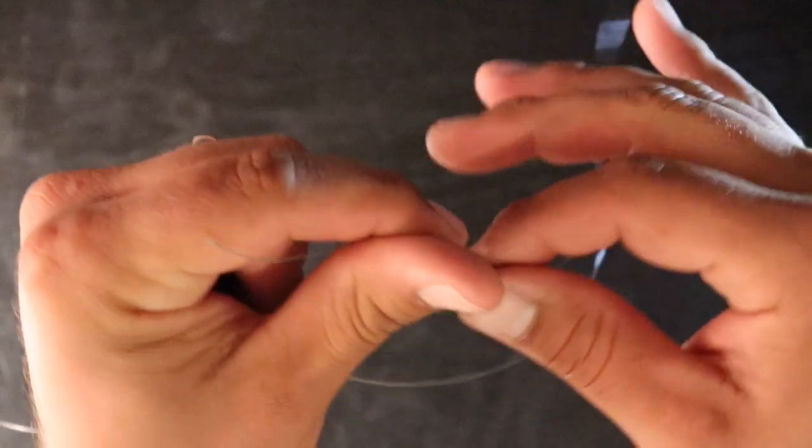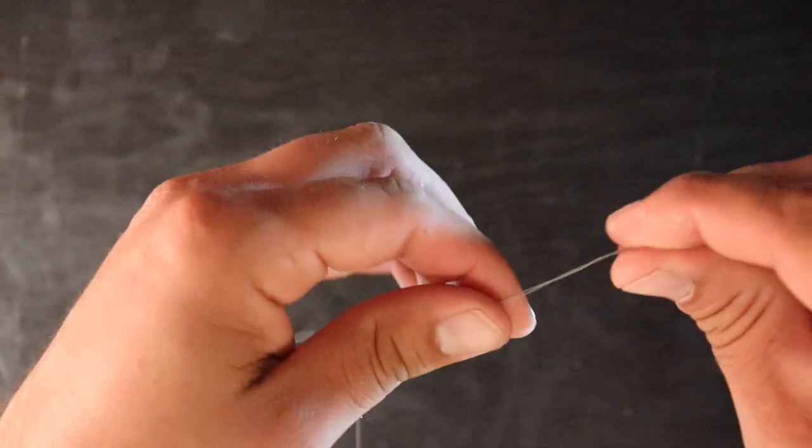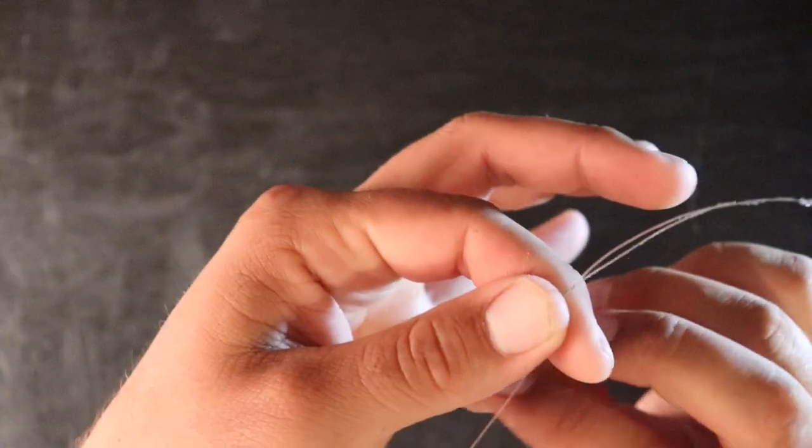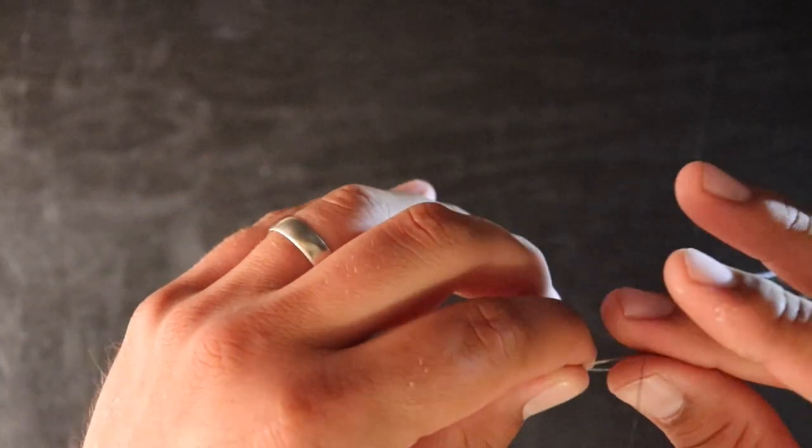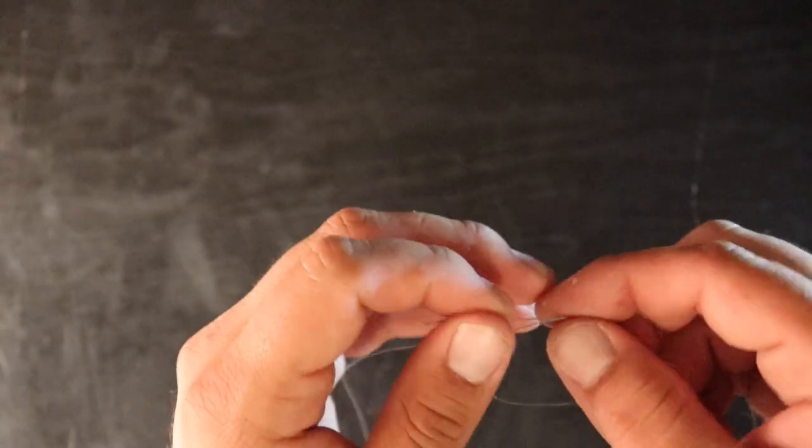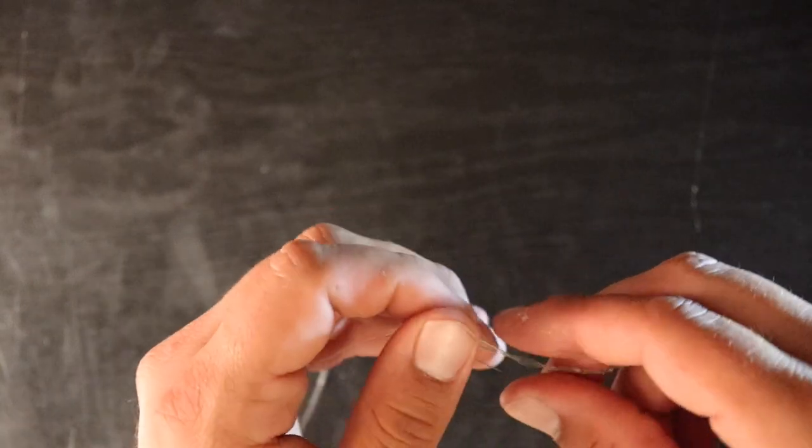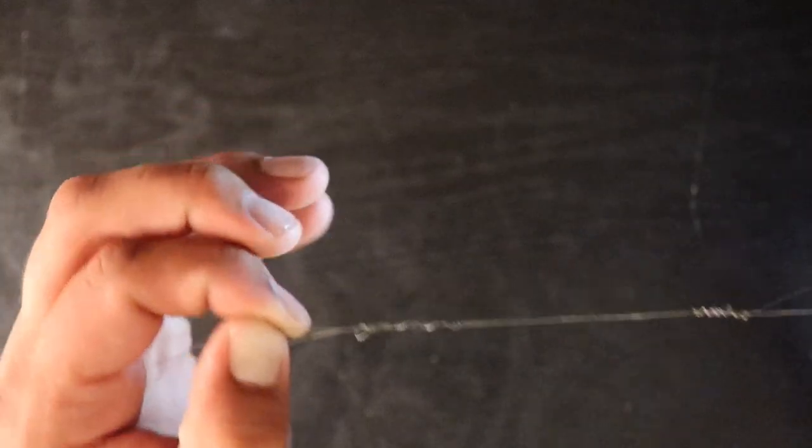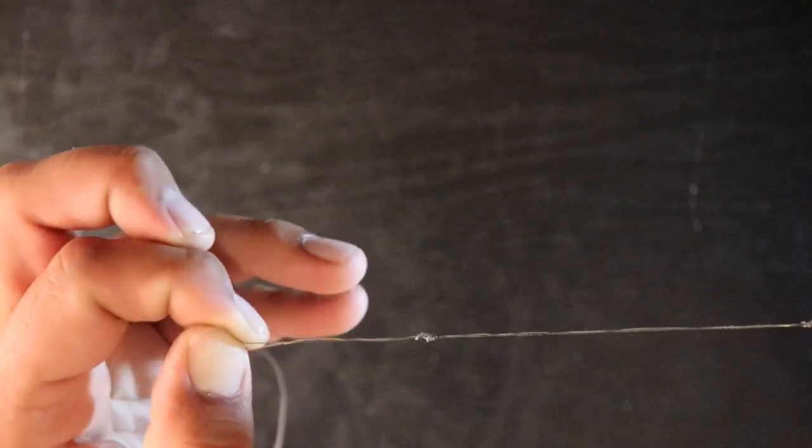So next we're going to take the tag end of our braid and we're going to make a loop the opposite direction. We're going to go over top of our mainline and our leader there. We're going to do the same thing. Go one, two, through nine, and ten. Same thing, a little saliva. We're going to pull the tag end of our braid and the mainline of our braid. See that line cinch down.